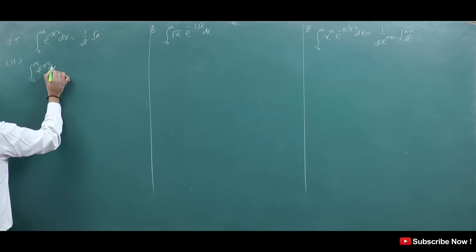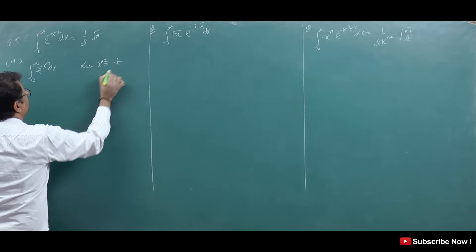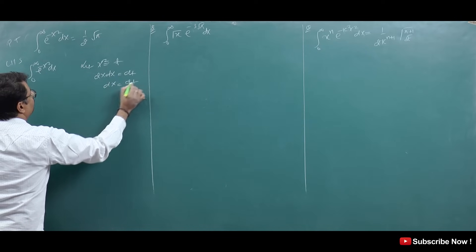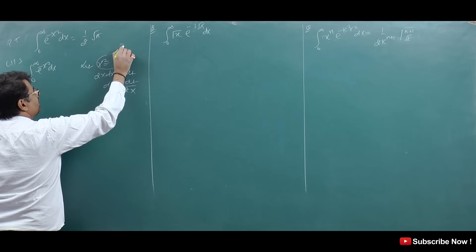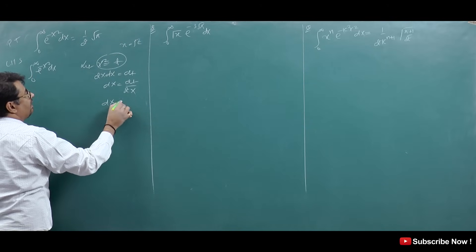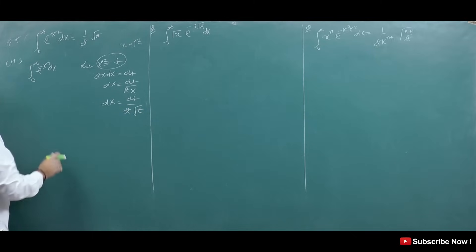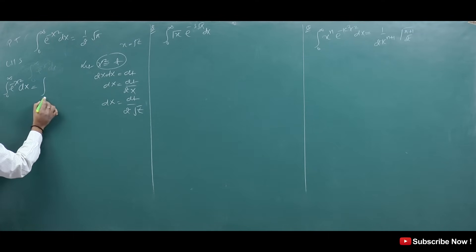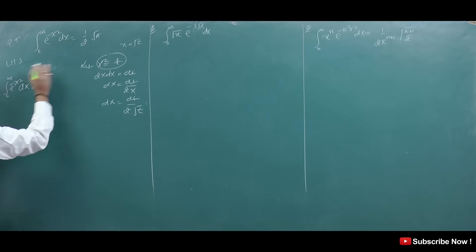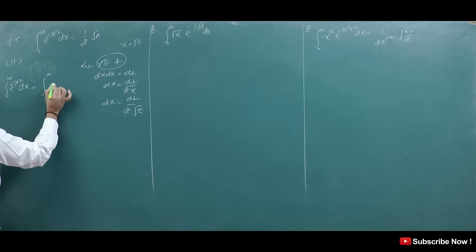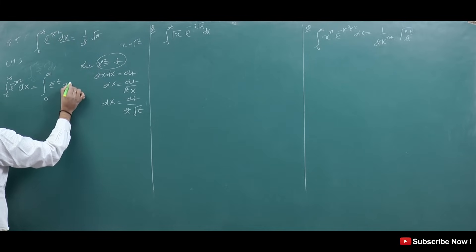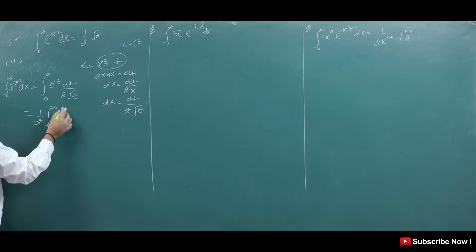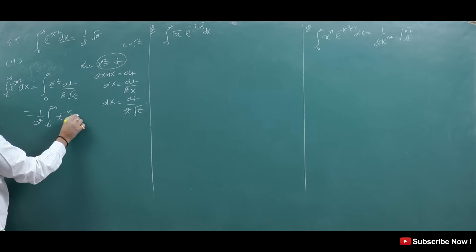Now the next question: evaluate ∫₀^∞ e^(−x²) dx. Let x² = t, so 2x dx = dt, then dx = dt/(2x). And x = √t, so dx = dt/(2√t). Substituting the limits: when x=0, t=0; when x=∞, t=∞. So the integral becomes ∫₀^∞ e^(−t) · dt/(2√t), which is (1/2)∫₀^∞ t^(−1/2) e^(−t) dt.